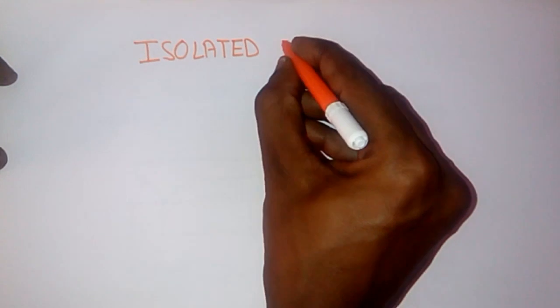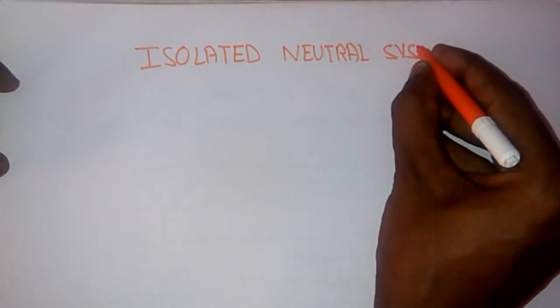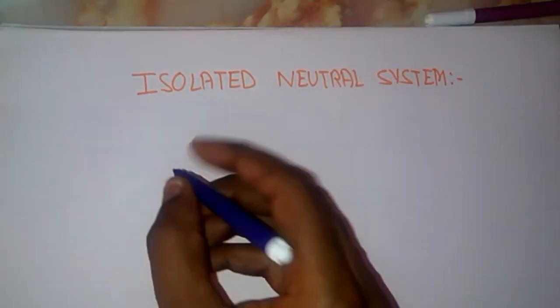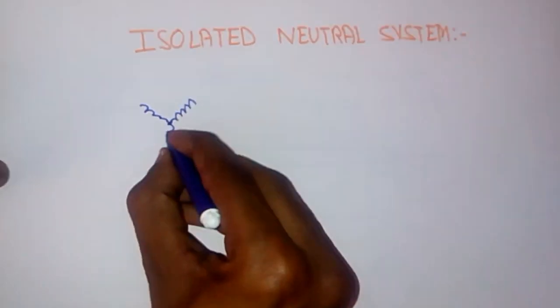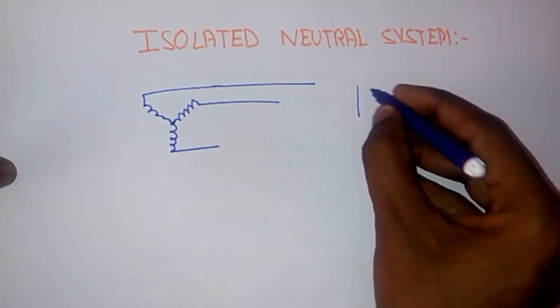Isolated Neutral System. Isolated Neutral System is that system in which the neutral point of generator is not connected to the earth.